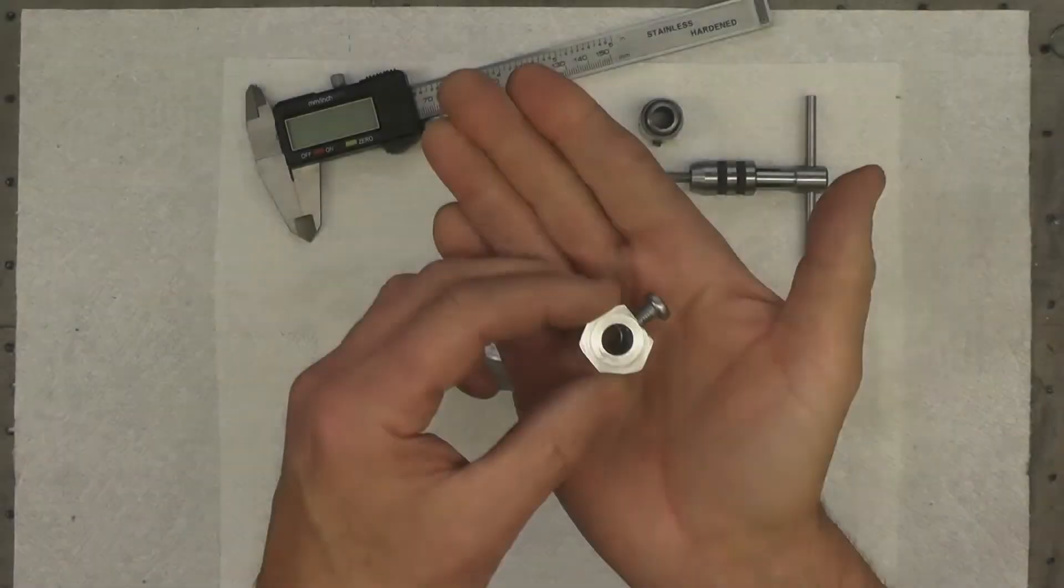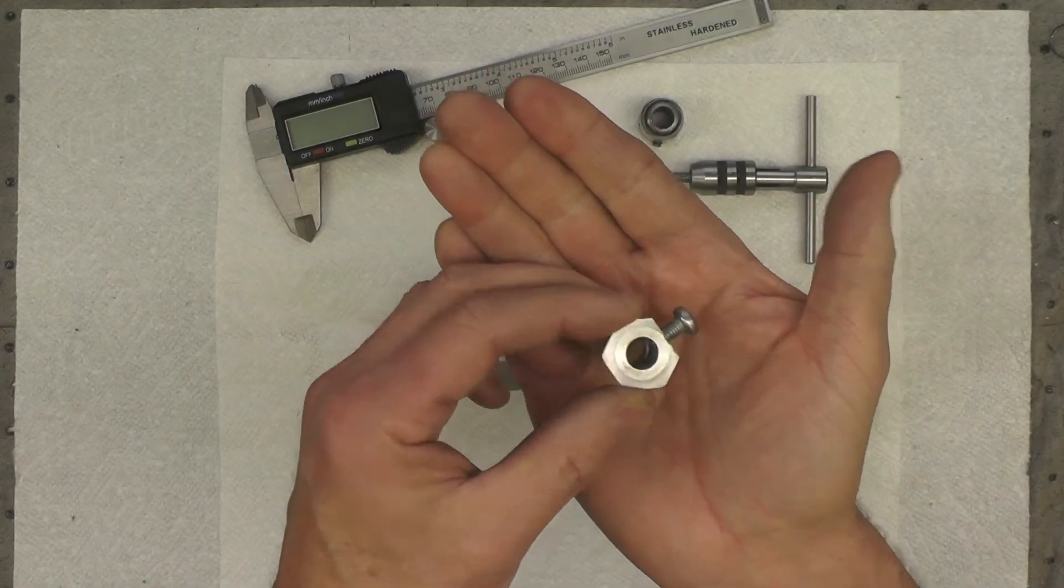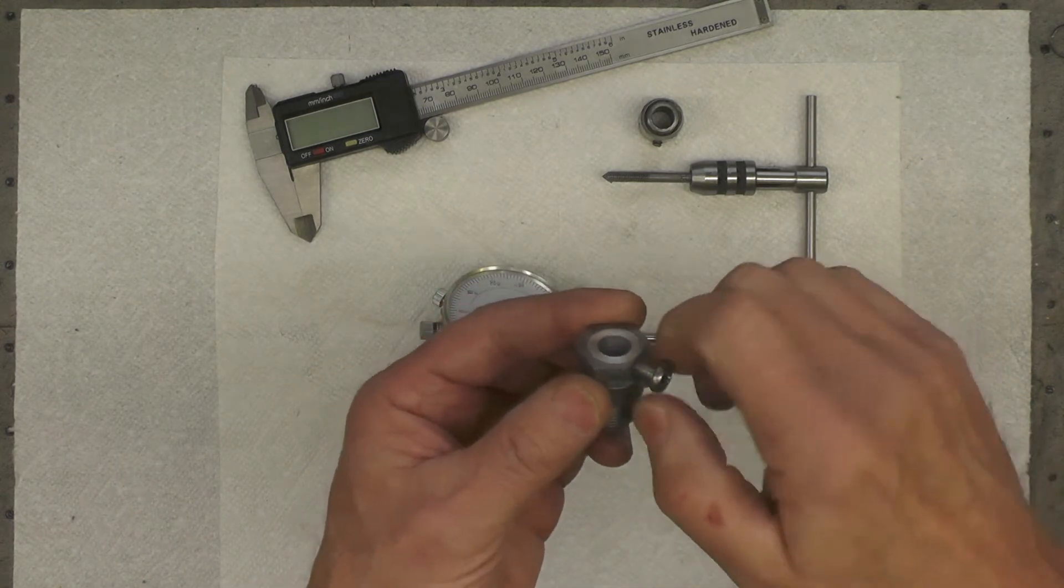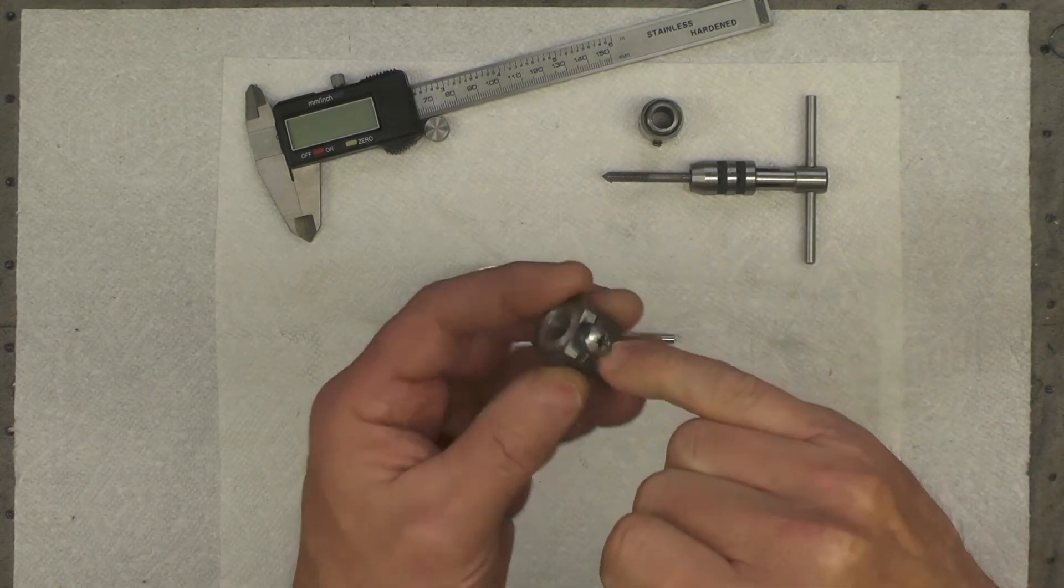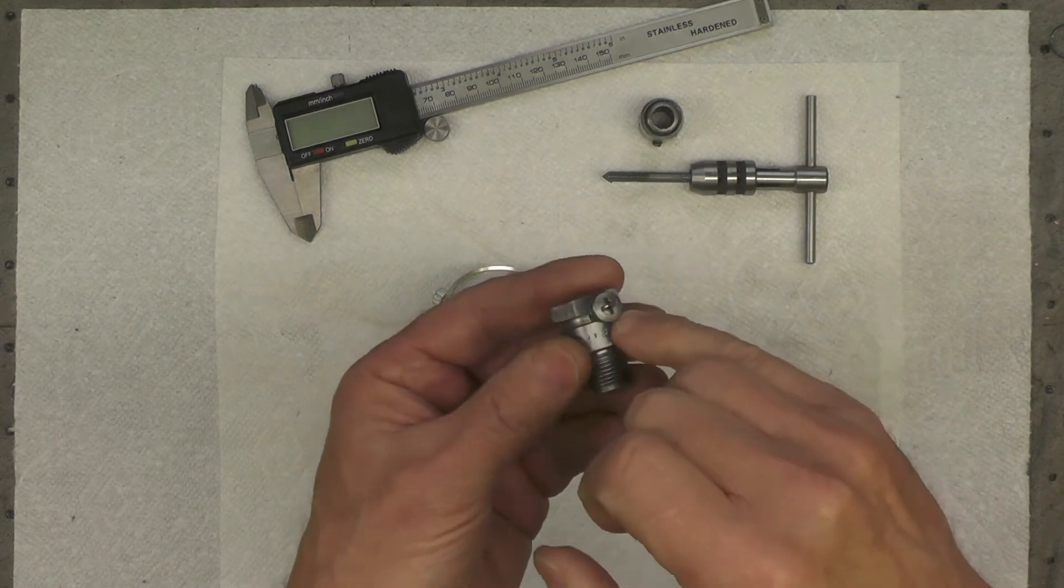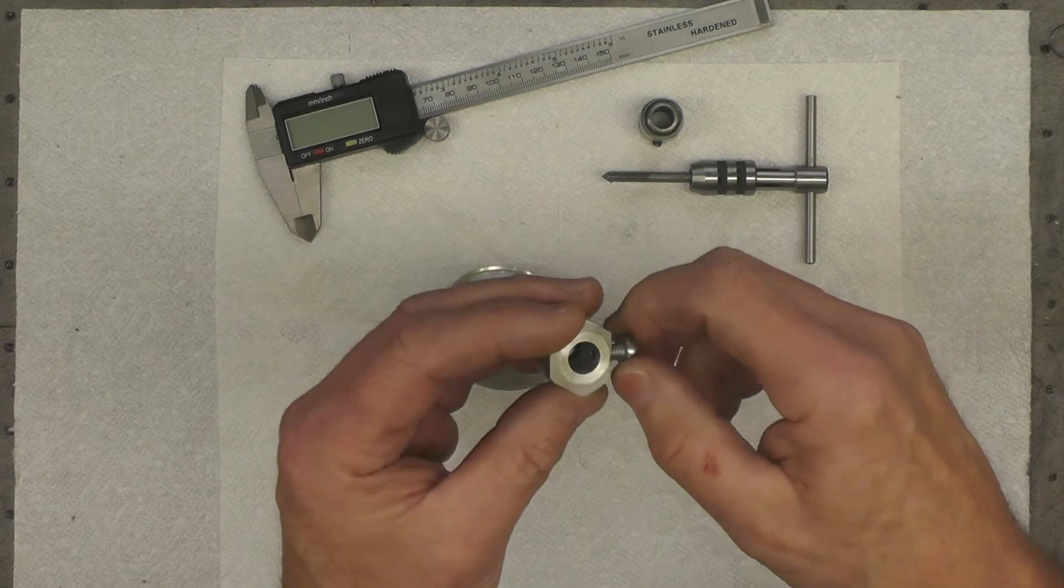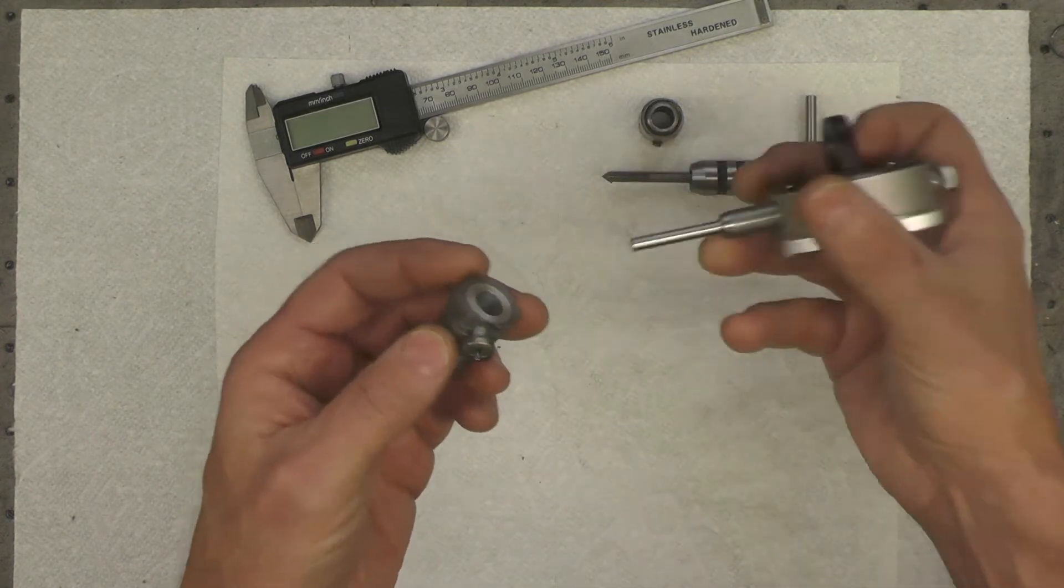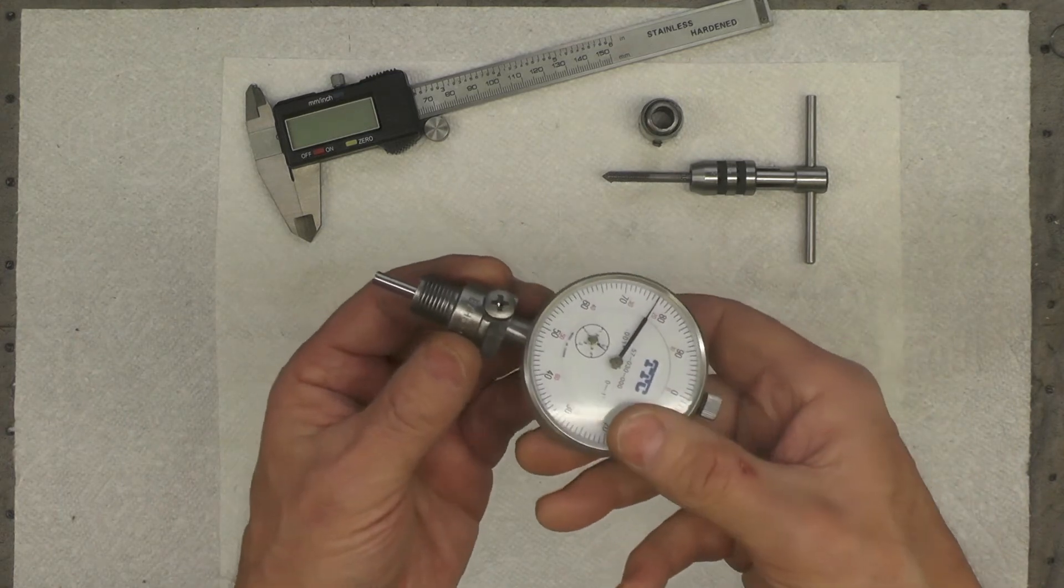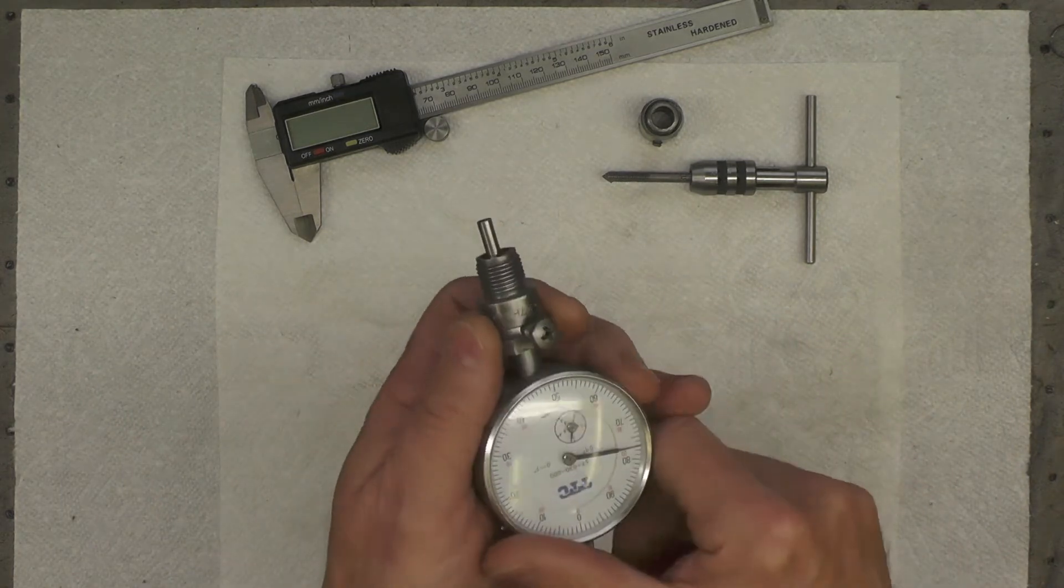There's our dial indicator adapter finished. I've put an M5 by 0.8 pitch regular screw in there for now. I might eventually replace that with an Allen head set screw. The indicator goes in and it fits comfortably.